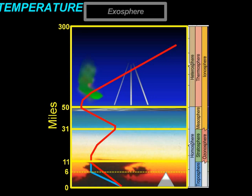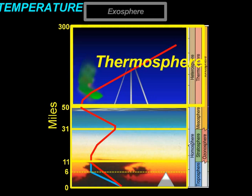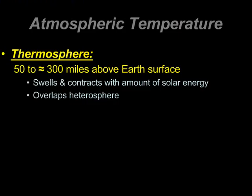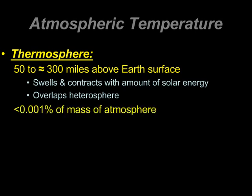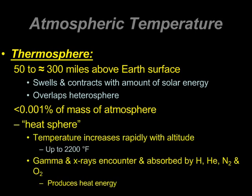We always assumed the higher you would go up, the cooler it would be. Let's focus first on the thermosphere. The thermosphere is anywhere from 50 to about 300 miles above our surface. That range of about 300 miles reflects the fact that it swells and contracts based on the amount of solar energy. This also overlaps with the heterosphere from the previous image, and most of the mass of the atmosphere is found below the thermosphere.